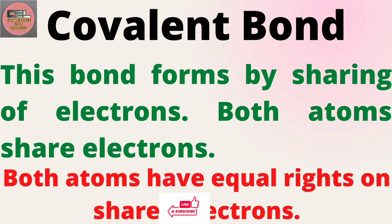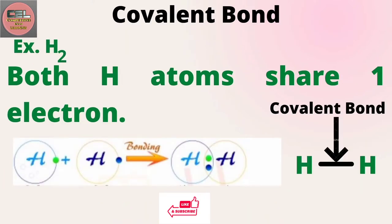In the case of a covalent bond, electrons are shared between the bonding atoms — both atoms have equal rights over the electrons. See the example of H₂: both hydrogen atoms share one electron each, because they only have one electron each. To form a bond they need at least two electrons, so both combine and share their electrons, and now both electrons are in the possession of both hydrogen atoms.